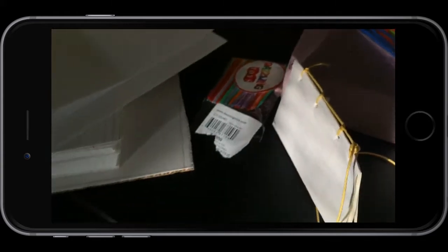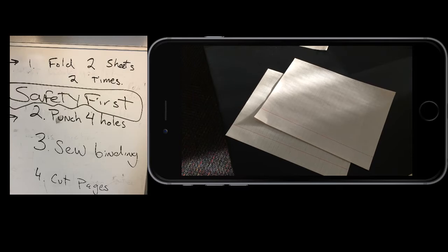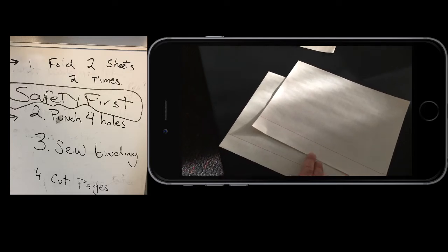The plan for first grade today is to build this simple book. We're going to start with eight and a half by eleven pages and we're going to fold these in half twice.